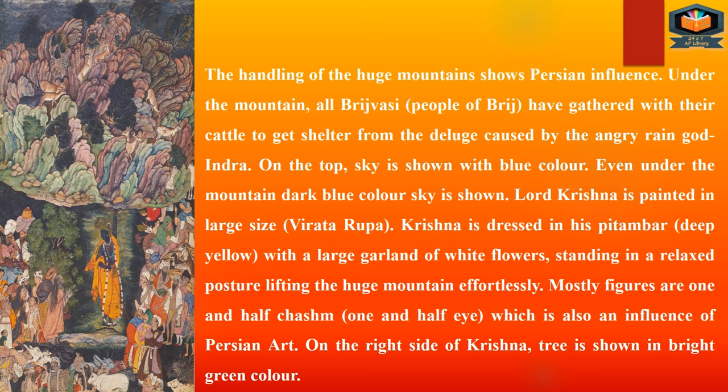Once again, Persian art influence is clearly visible here. On the right side of Krishna, a tree is shown in bright green color.